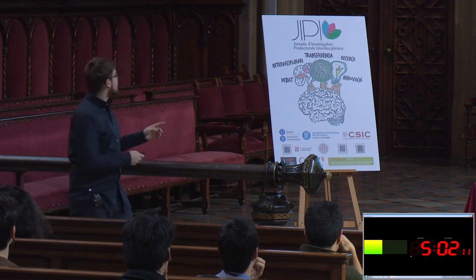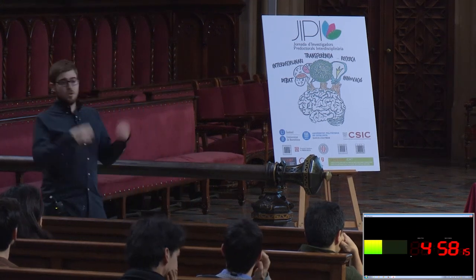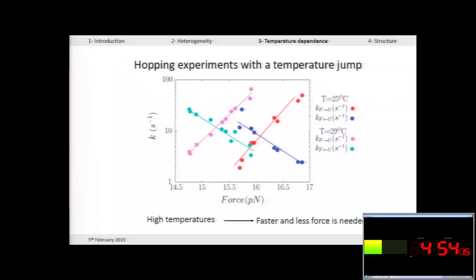Okay. So, with these two temperatures, or more, we can study how the kinetics and the coexistence force change. As you can see, when we increase the temperature, we need less force to open the molecules, and also, we can see that the kinetics are faster. So, due to these impacts of the molecules, the molecule can oscillate faster.